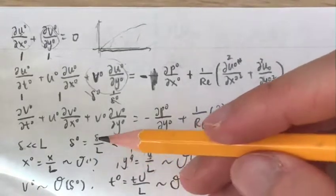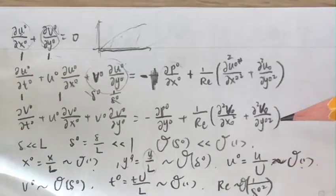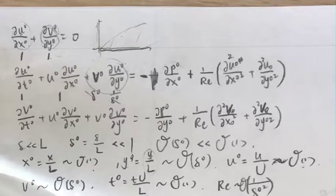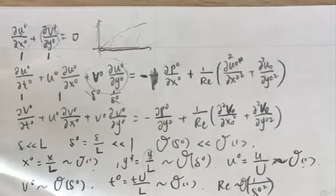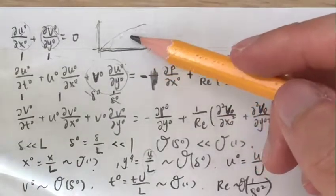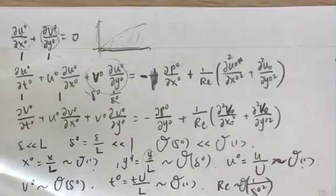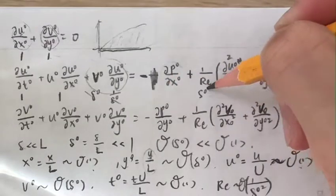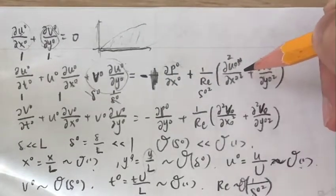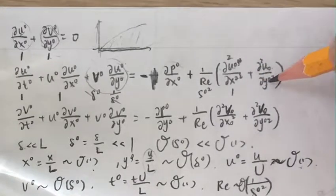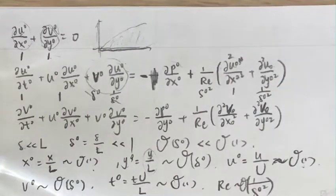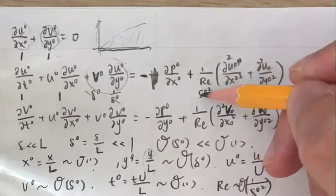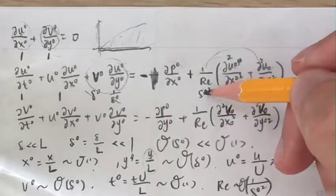Delta-naught is a very small number, so 1 over delta-naught is a very big number, and 1 over delta-naught squared is an even larger number. So we are assuming the Reynolds number is very, very high — about 2 orders of magnitude higher than our length scale. We are considering a boundary layer where the Reynolds number is very high. So 1 over Reynolds gives a quantity of order delta-naught squared. For the viscous term d²u-naught/dx-naught²: x-naught is 1, so this term is of order delta-naught squared — it can be neglected. But the term d²u-naught/dy-naught²: y-naught is delta-naught, giving order delta-naught squared times 1 over delta-naught squared, which is of order 1 — it cannot be neglected.